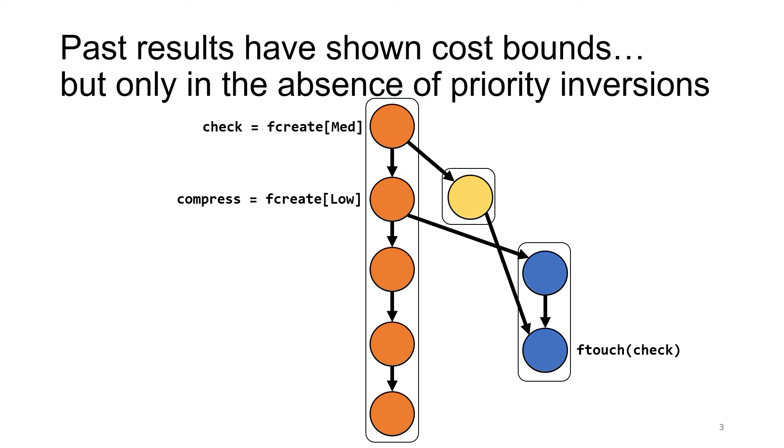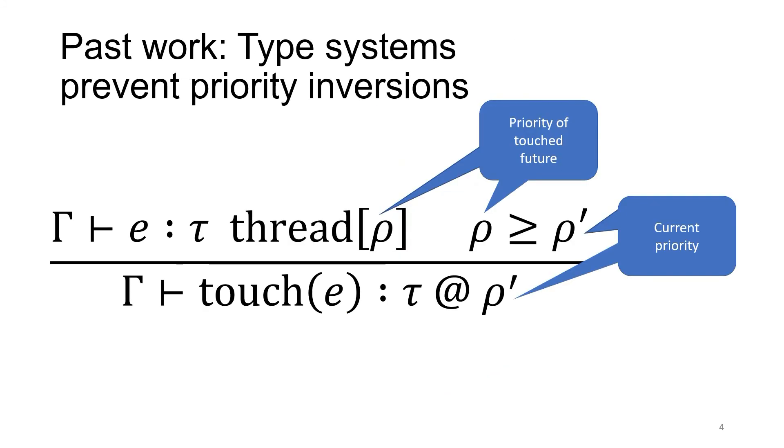The prior work has also shown bounds on the response time of threads, allowing us to prove, for example, that our email client's compression scales with the number of processors while the event loop never takes too long to respond. In order for these bounds to hold though, a program needs to not have any priority inversions, in which a high priority thread waits on a low priority one. In past work, we've ruled out priority inversions with modal type systems that track the priorities of futures and require that at a touch, the current priority is lower than the priority of the touched future. Because long zoom meetings are confusing and exhausting enough as it is, this will be the only inference rule in this talk.